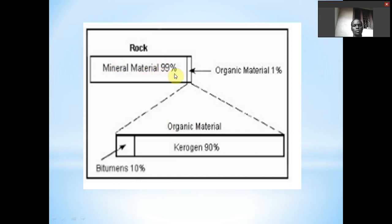This is our rock. In the rock we have 99 percent of mineral matter in sedimentary rock which is deposited together with organic matter. In that rock we have 99 percent of clastic materials and organic material is only one percent. Then we observe that 10 percent is bitumen.